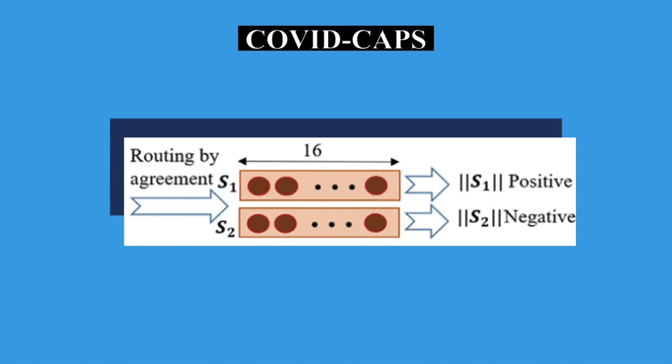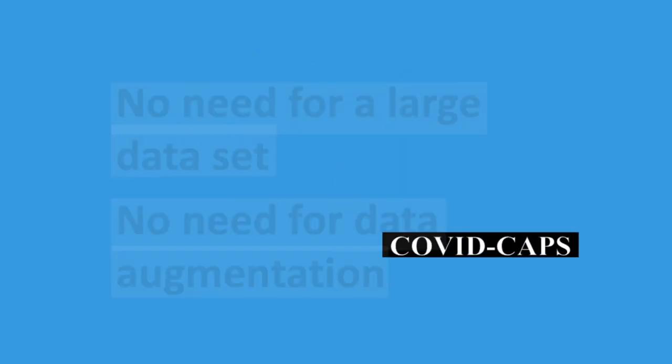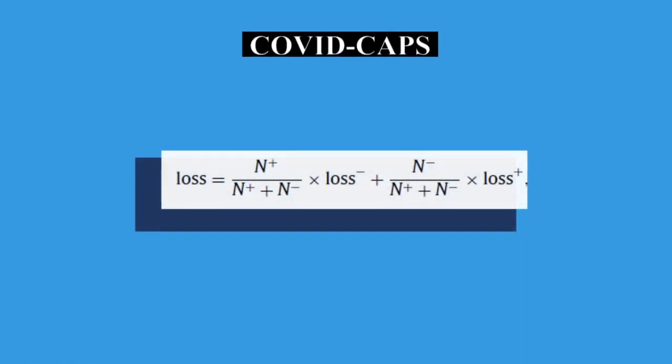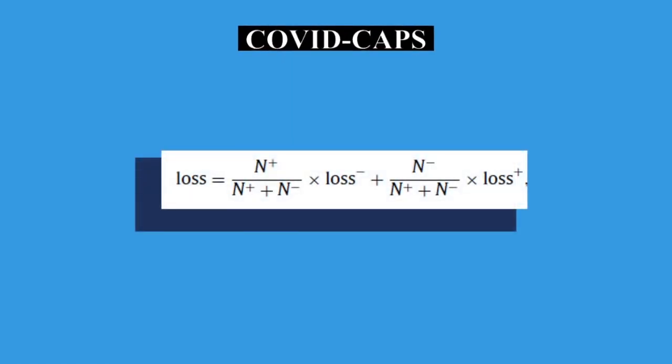The length represents the probability of each class being present. The advantages of using a capsule network are eliminating the need for large datasets or data augmentations. In general, we have fewer negative than positive cases. Therefore, we adjusted the loss function to handle the imbalance.